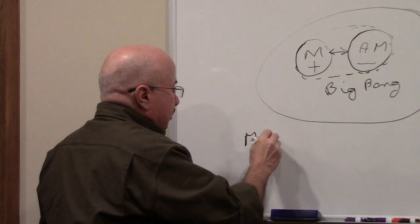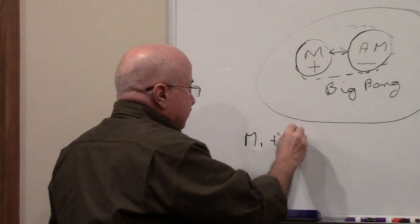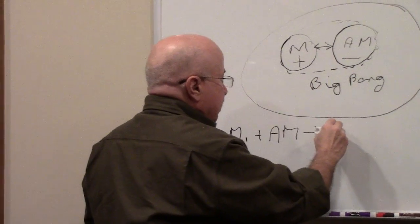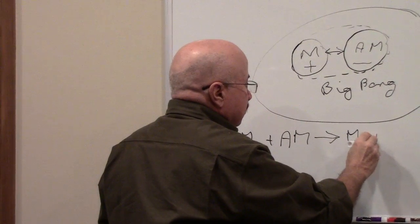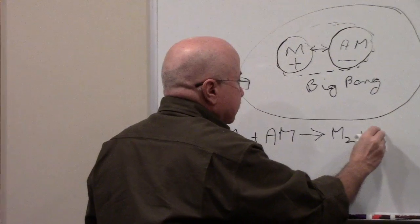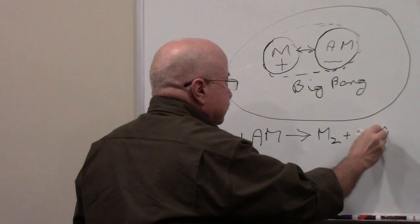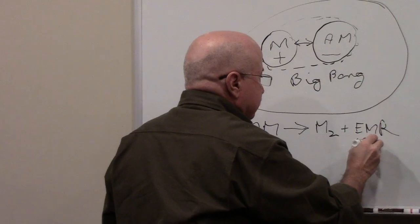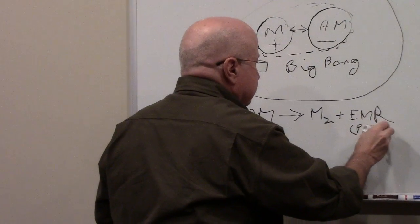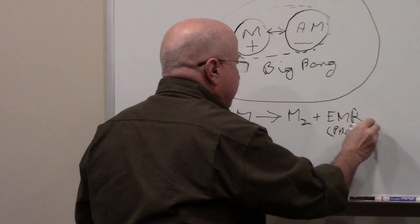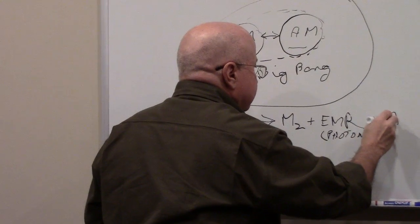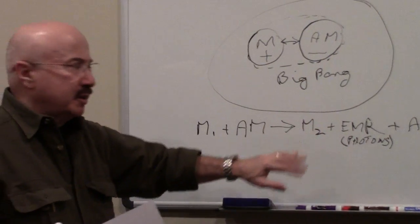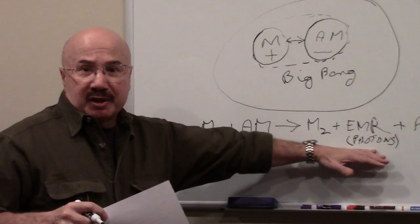What we're seeing is a reaction where you have matter. I'm going to call that M1 plus antimatter. And the chemical reaction that takes place, and that's how I do it as a chemical reaction, is you get matter two, M2, plus electromagnetic radiation. And these are photons, plus antimatter.